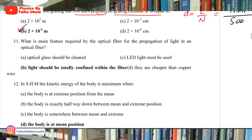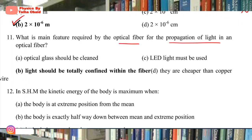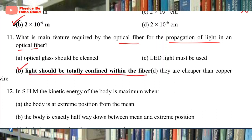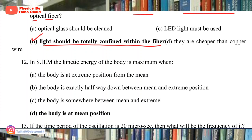Question 11: The main feature required by optical fiber for propagation of light is that light should be totally confined within the fiber. For this purpose we use two phenomena: total internal reflection and continuous refraction.